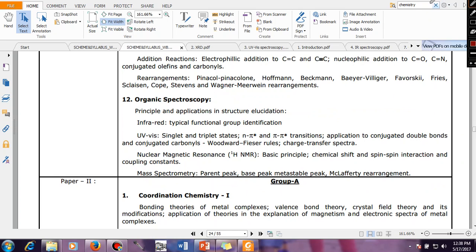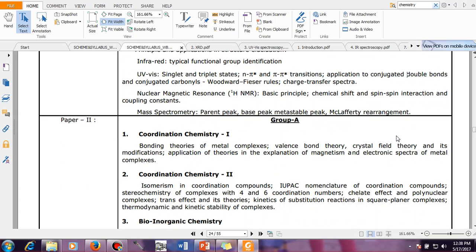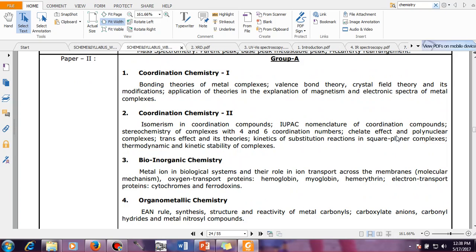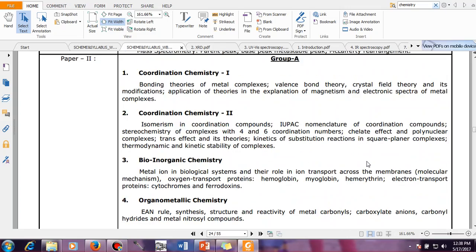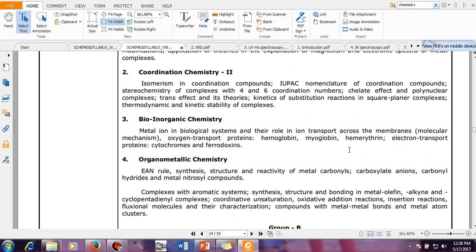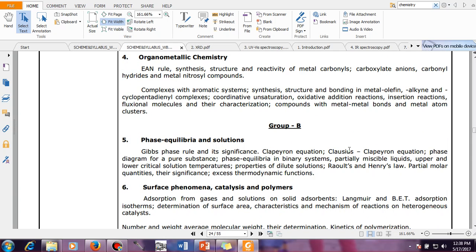You have Paper Two. Till now we were discussing about Paper One. In Paper Two you have coordination chemistry, bio-inorganic chemistry, organometallic chemistry. So Group A of Part Two is like you have to memorize things, so this group is little bit difficult to prepare because you have to only memorize things. So many things you have to memorize.